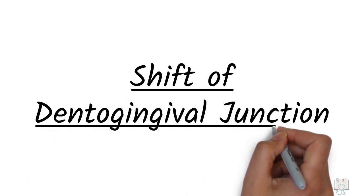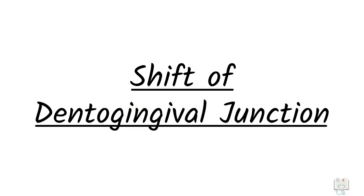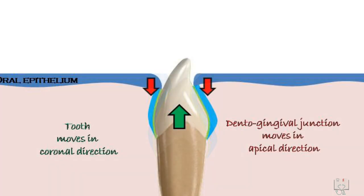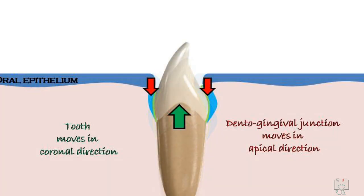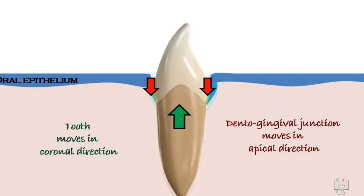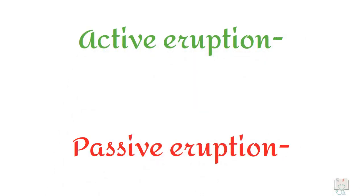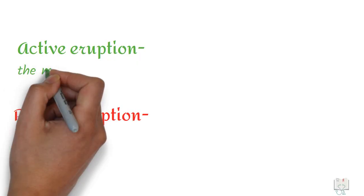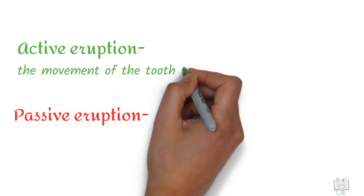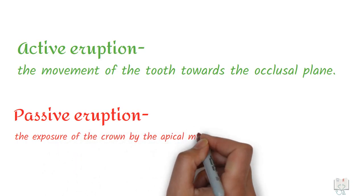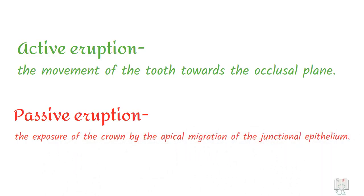Shift of dento-gingival junction: As already mentioned, as the tooth erupts occlusally, the dento-gingival junction shifts apically. This phenomenon leads to two terminologies: active eruption and passive eruption. Active eruption is the movement of the tooth towards the occlusal plane, and passive eruption is the exposure of the crown by apical migration of the junctional epithelium.